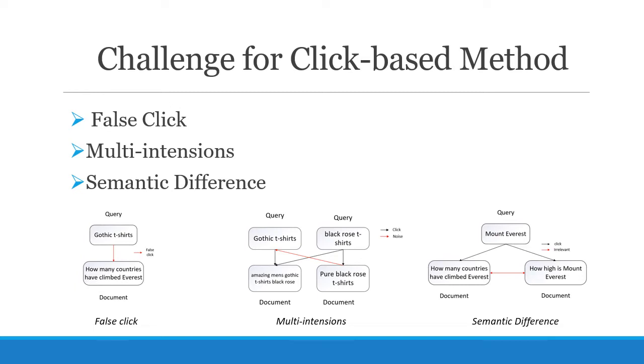Thus, the information introduced from a historical click may become noise when the document is searched by a query belonging to another intention. The third one is semantic difference: even if two single intention documents have the same click, there might be differences in their semantics. For example, two documents with themes 'how high is Mount Everest' and 'how many countries have climbed Everest' may have the same click 'Mount Everest'.